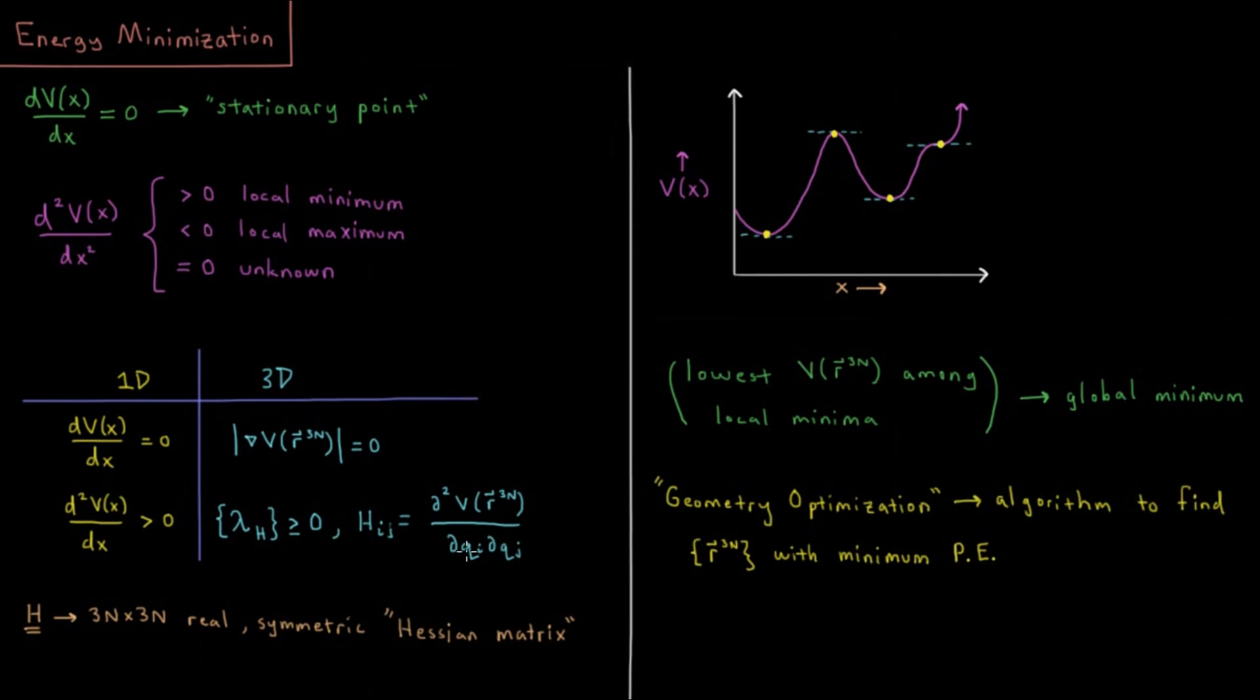So you can imagine X1, Y1, Z1, X2, Y2, Z2, etc. for these QI and QJ. You have a 3N by 3N matrix with 3N squared elements of all of those mixed partial derivatives, all those second derivatives of the potential with respect to those coordinates. So that's called the Hessian matrix.